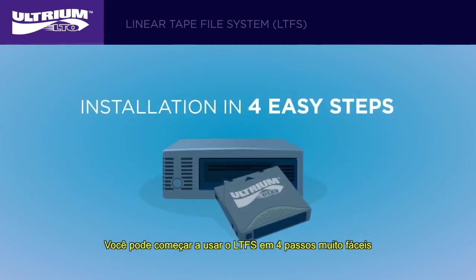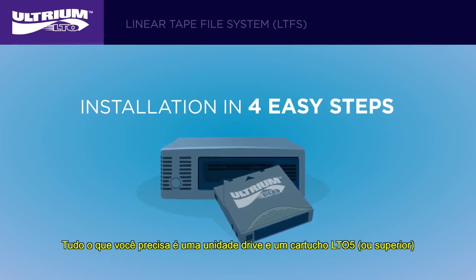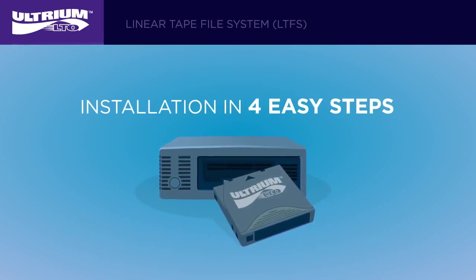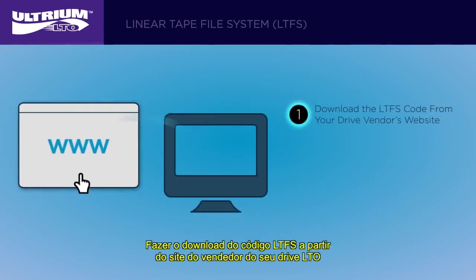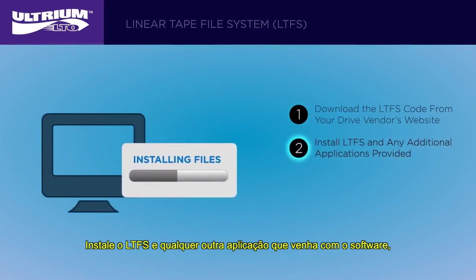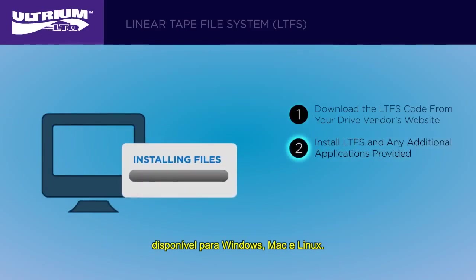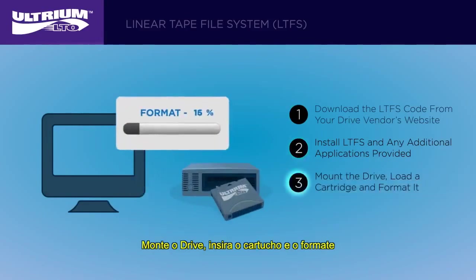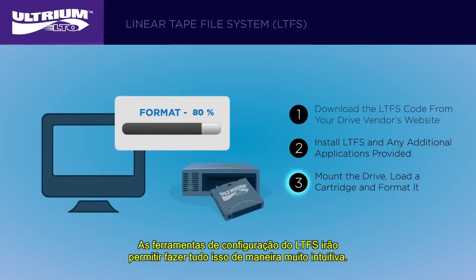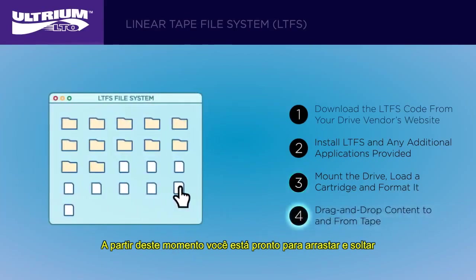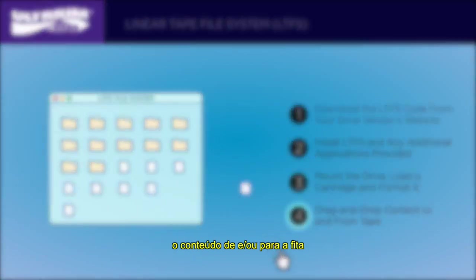You can start using LTFS in four easy steps. All you need is an LTO5 or later generation LTO drive and cartridge. Download the LTFS code from your drive vendor's website. Install LTFS and any other application that comes with the software — available for Windows, Mac, and Linux. Mount the drive, load a cartridge, and format it. The LTFS configurator tools will allow you to do this in a very intuitive way. At this point, you're ready for drag and drop content to and from tape.